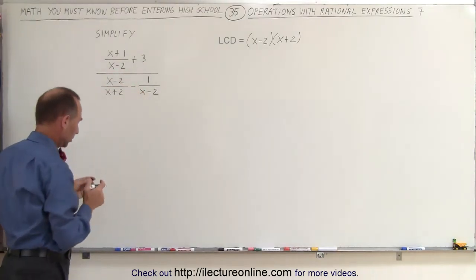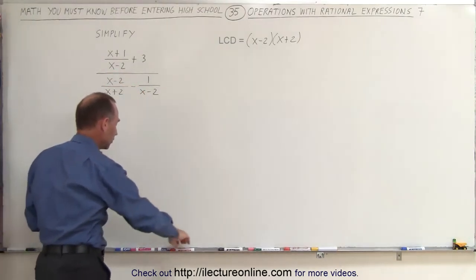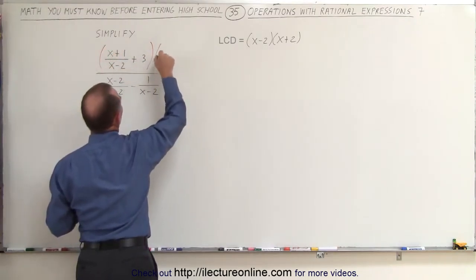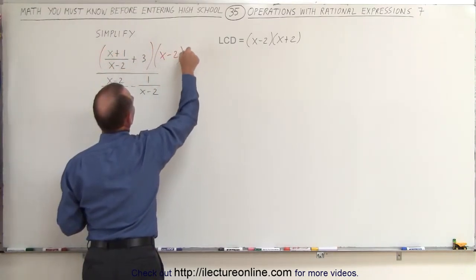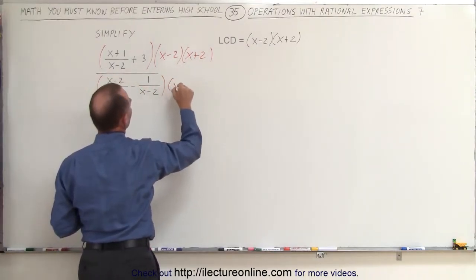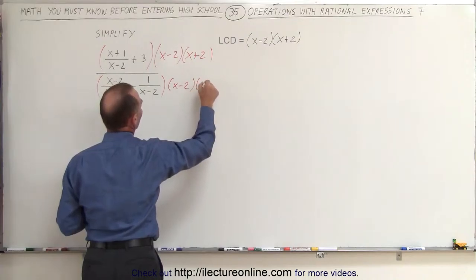That makes it a lot simpler of an expression. So what we're going to do here is multiply the numerator by x minus 2 times x plus 2, and of course we have to do exactly the same to the denominator, x minus 2 times x plus 2.